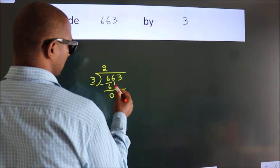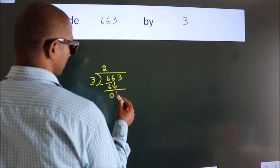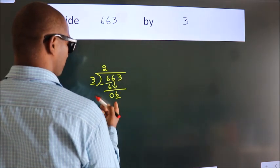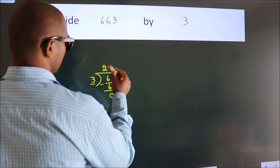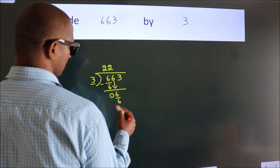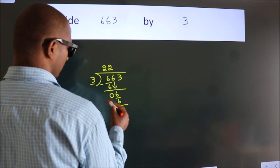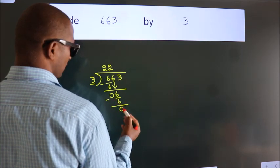After this, bring down the beside number. So 6 down. So 6. When do we get 6? In the 3 table. 3 times 2 is 6. Now we subtract. We get 0.